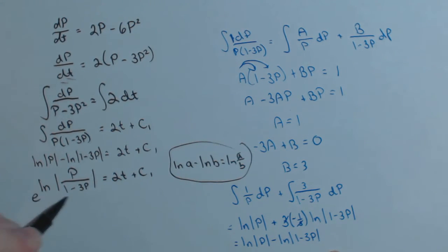Now we can make both sides exponents of e. So over on this left-hand side, all we get is p over 1 minus 3p. Now we're going to absorb that constant over here, and so this is going to be ce to the 2t. Basically what we're doing is we let c equal e to the c1. That's our little constant we absorb there.